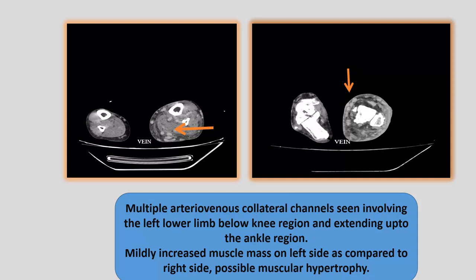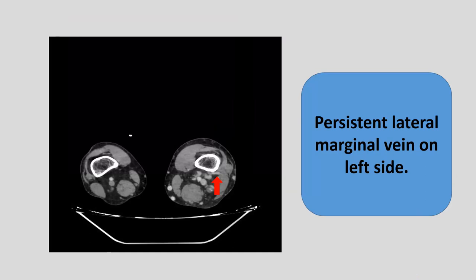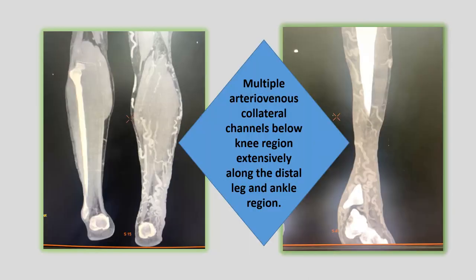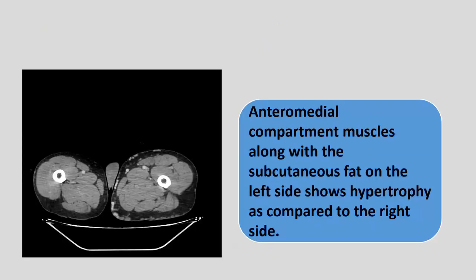There were multiple arteriovenous collateral channels seen involving the left lower limb below the knee region and extending up to the ankle region. Mildly increased muscle mass on the left side as compared to the right side — possible muscular hypertrophy. The persistent lateral marginal vein was seen on the left side. On coronal images, we can see the multiple arteriovenous collateral channels below the knee region extensively along the distal leg and ankle region. The anteromedial compartment muscles along with the subcutaneous fat on the left side show hypertrophy as compared to the right side.